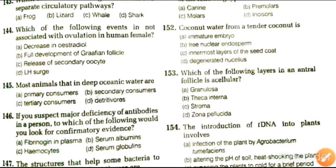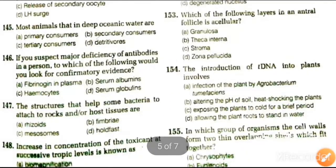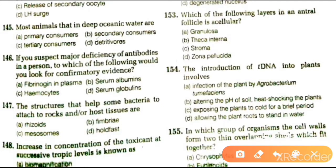Next question: the introduction of T-DNA into plants involves infection of the plant by Agrobacterium tumefaciens, altering the pH of soil, heat-shocking the plants, exposing the plant to cold for a brief period, or allowing the plant roots to stand in water. The answer is infection of plant by Agrobacterium tumefaciens.